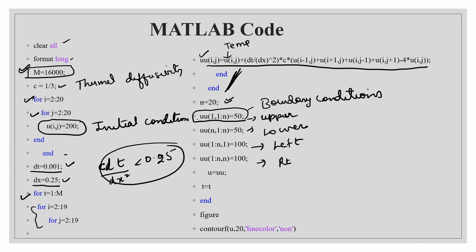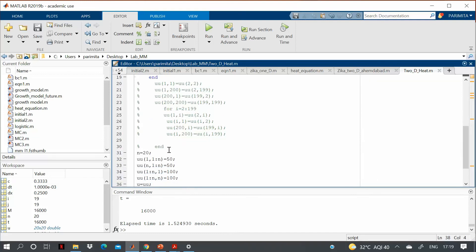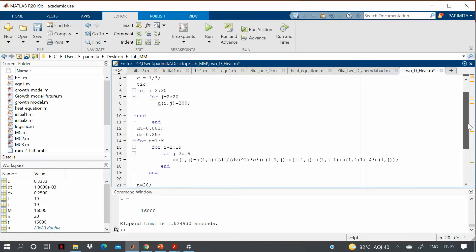For time greater than zero, the boundaries are set to the prescribed temperatures. Then we plot a contour plot of u over the domain. Now I'll copy-paste this code into MATLAB and run it to see the temperature profile after 160 seconds.